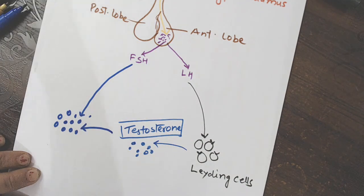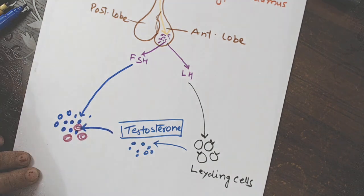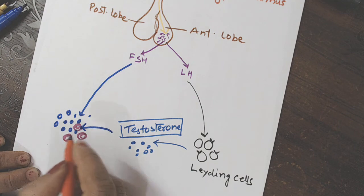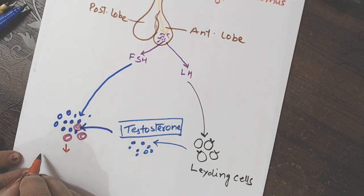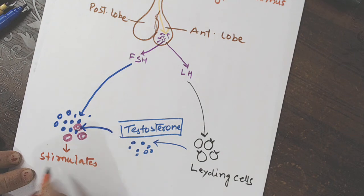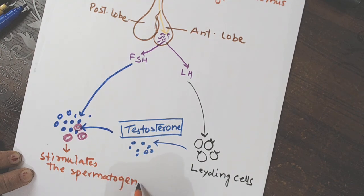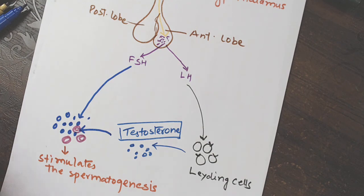Aur saath me honge hamare kaun si cells? Agar confusion nahi hai, toh hum dur karna hai. Toh humein kuch color different lena padega. Ye hamare beech beech mein honge hamare spermatogonial cells. So, Sertoli cells and spermatogonial cells, what process starts?